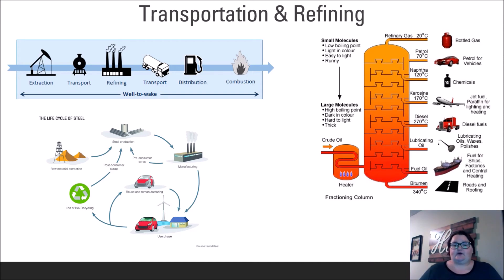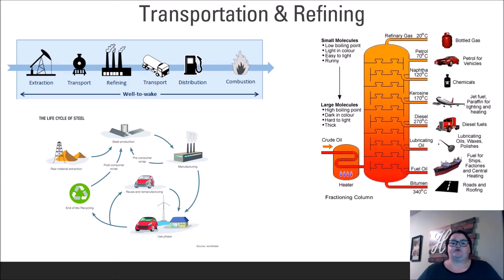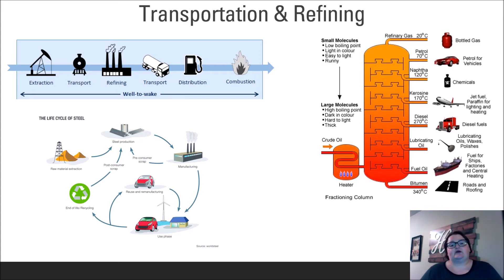After extraction, the material must be transported and refined in order to be of any use. In most cases, the raw material is useless for the purposes we need it for until it has been refined through processes such as distillation, smelting, or a specific combination of processes like the Bessemer process. Minerals are transported by trucks, cars, rail, or pipelines to refining plants designed to remove impurities or separate out different components of the resource. Smelting is used to melt metallic resources to remove impurities and provide a pure component of the ore for use in manufacturing or for jewelry.